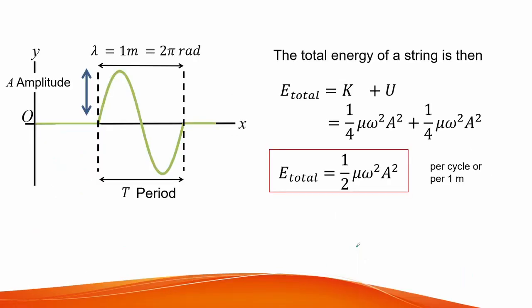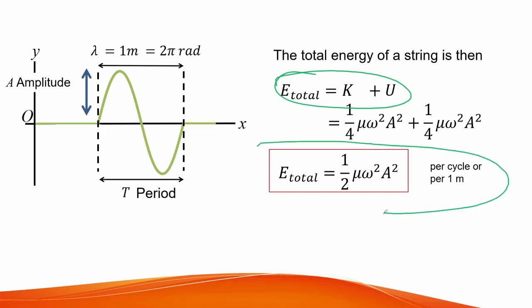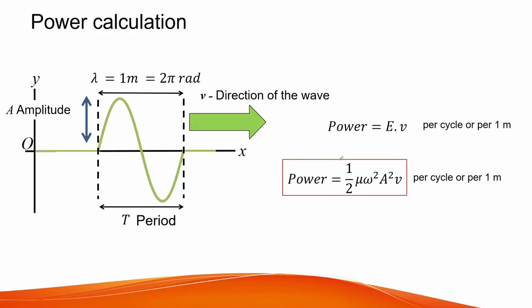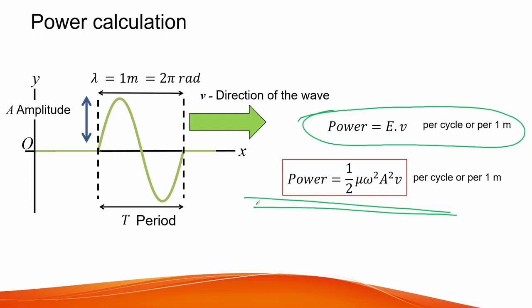Finally, the total energy of the string is the sum of kinetic and potential energy. The total energy equals one-half times linear density, times angular frequency squared, times amplitude squared — the total energy per cycle or per 1 meter. To get the power produced by the 1-meter string, we use power equals energy times wave speed, giving us one-half times linear density, times angular frequency squared, times amplitude squared, times velocity. This is the power produced by the wave per 1 cycle or per 1 meter.